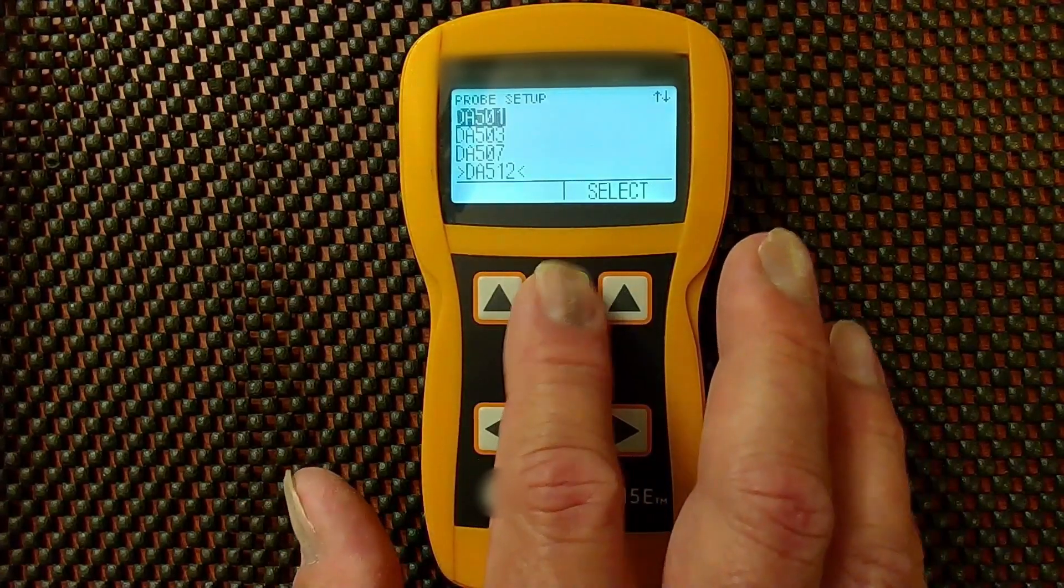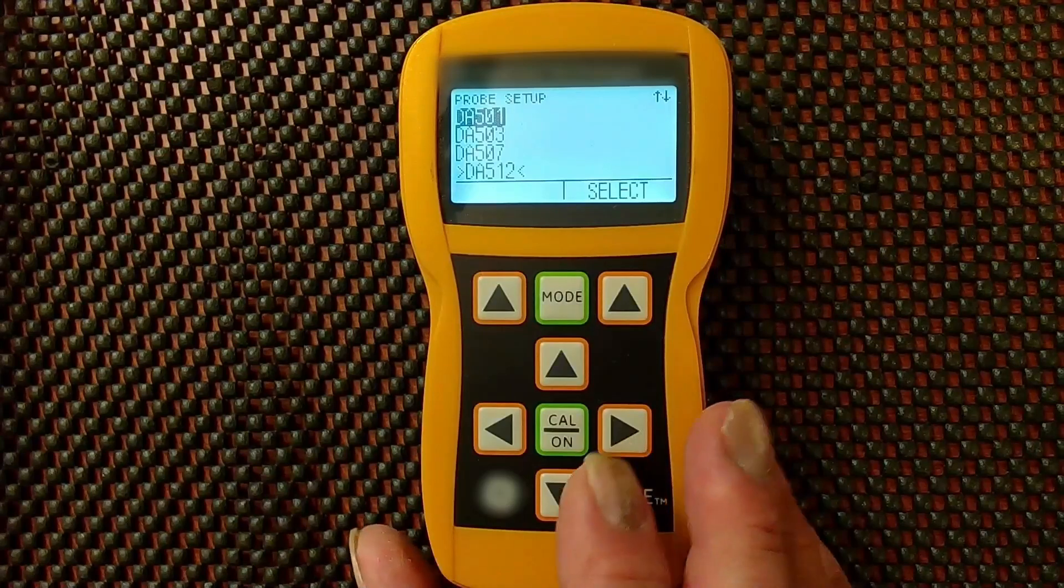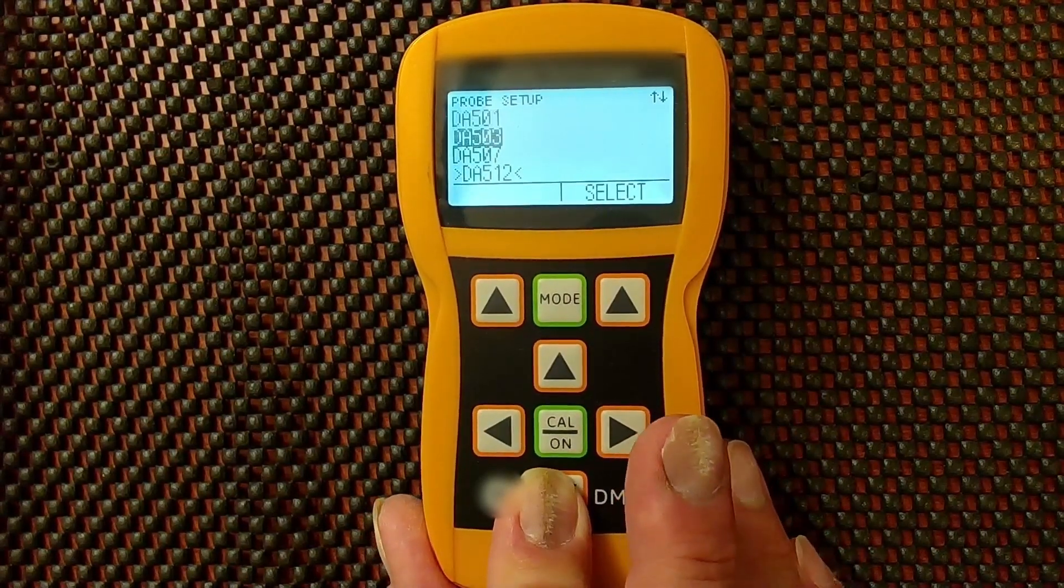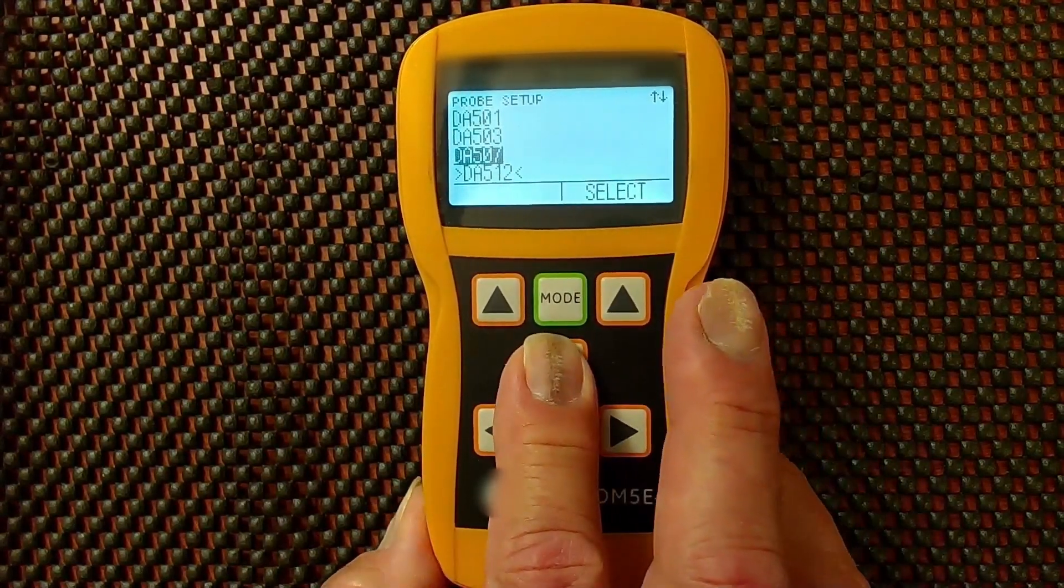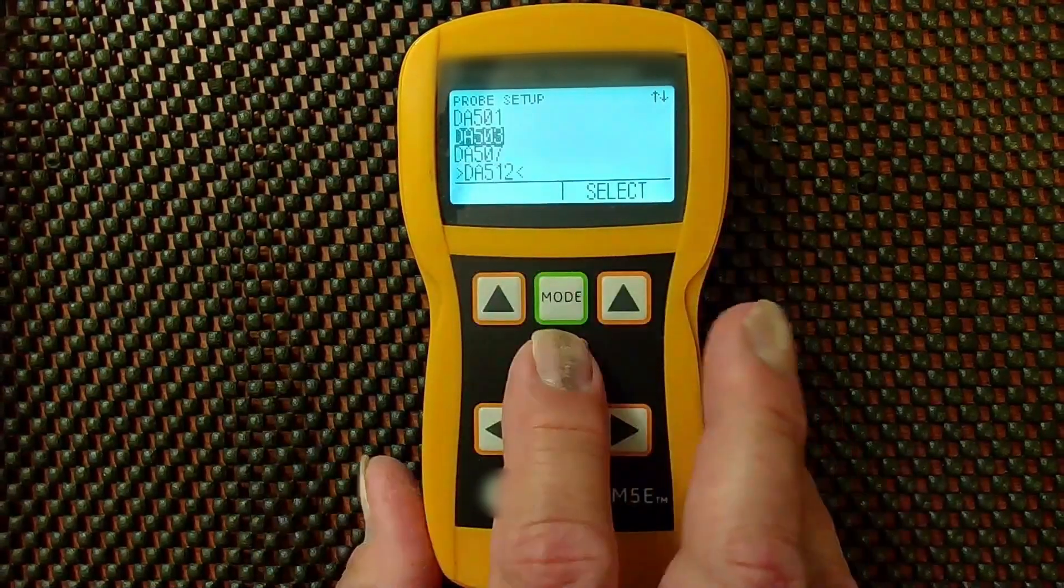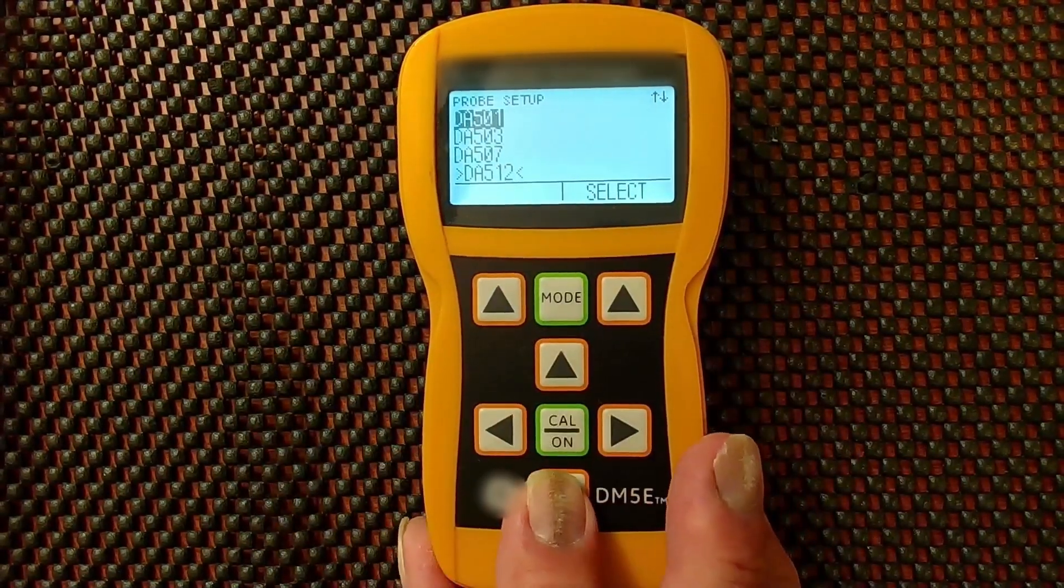You press the mode button to go to the probe selection menu. You can use the up and down arrow keys to move the cursor, the inverted video cursor, up and down through the list.